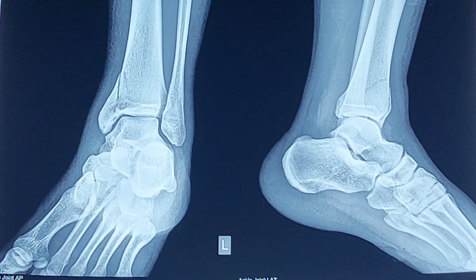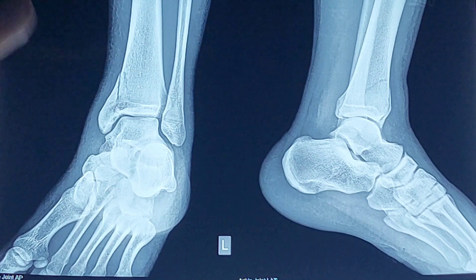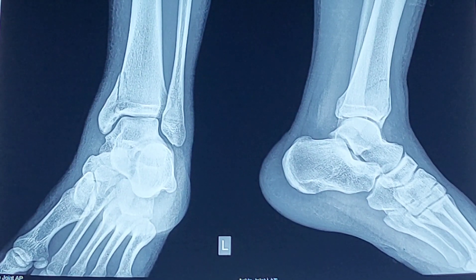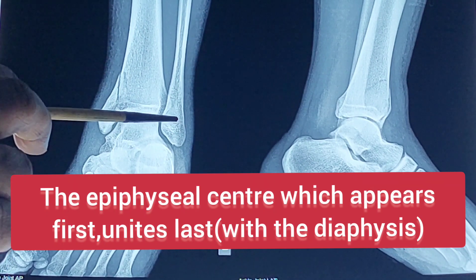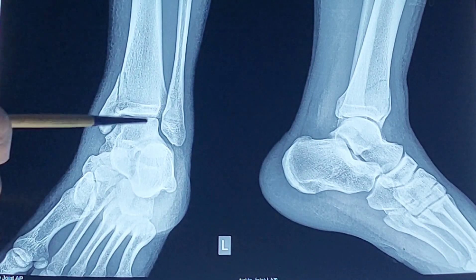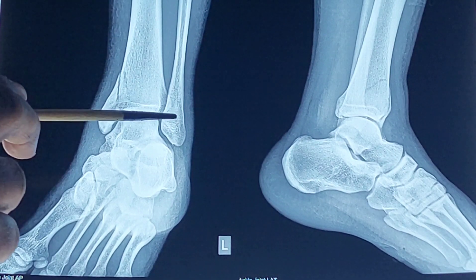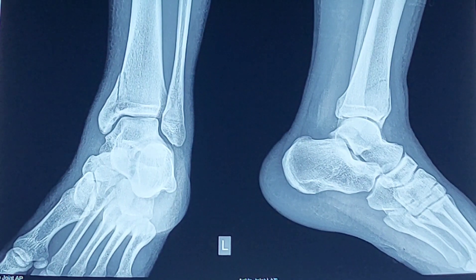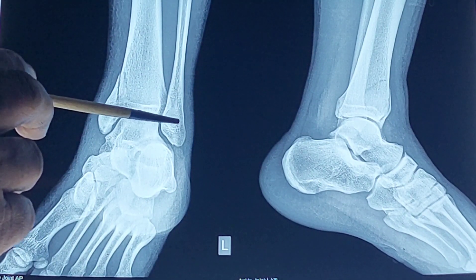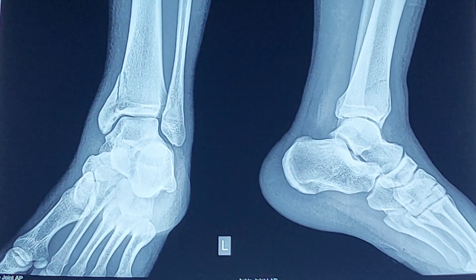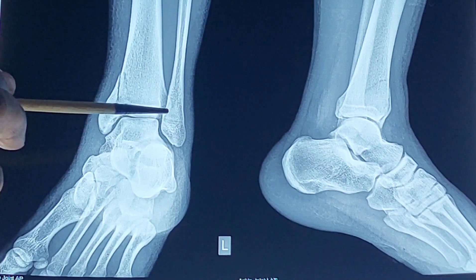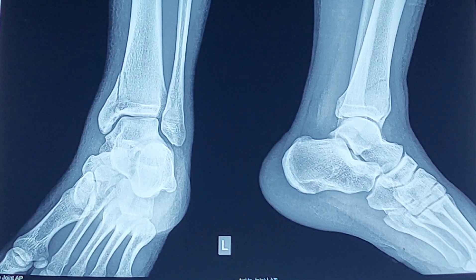Sometimes the question is asked: how does the fibula violate the law of ossification? The law of ossification states that the epiphyseal center which appears first unites last. The fibula has two ends — upper and lower. The center appears first in the lower end, so by law it should unite with the diaphysis later. But in the case of the fibula, although the center for the lower end appears at about 1 to 2 years, it unites with the diaphysis at 15 to 17 years. For the upper end, the center appears at about 3 to 4 years but unites at 17 to 19 years. So here the lower end center appears first and unites first — not last. This is a violation of the law of ossification for the lower end of the fibula.